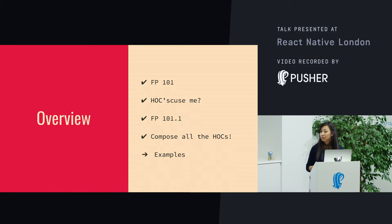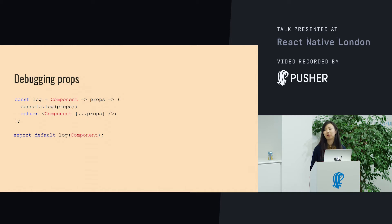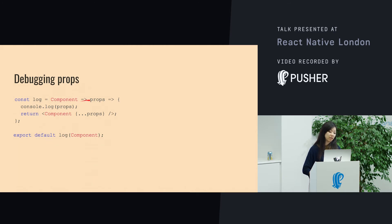I'm going to go through some examples of how we use higher-order components at Wonderbly. This is a pretty simple one — you can log what a component has as props. This is really good for debugging, especially if you've got some weird behavior somewhere. It takes in a component, does the logging of the props, and then returns the same component.